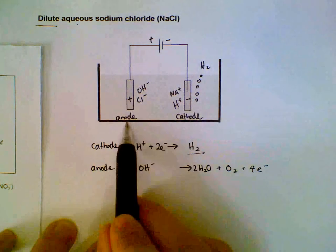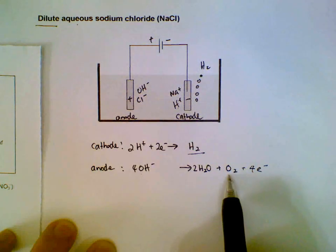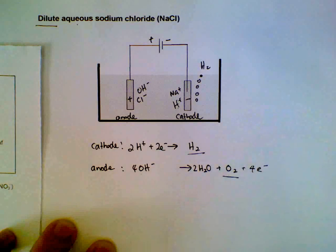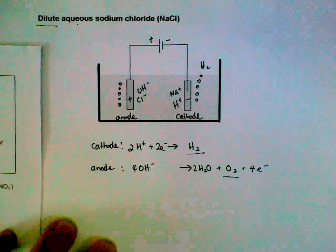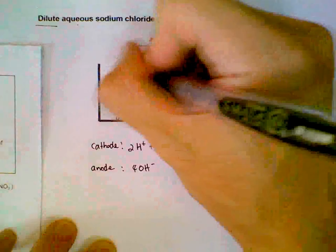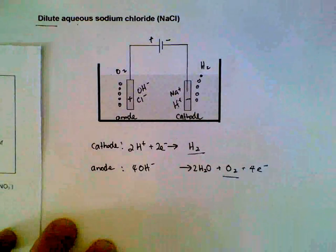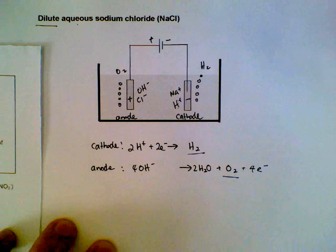At the anode, the product that we can see is oxygen gas. Again, we will see effervescence, and this time the gas when tested will relight a glowing splint.